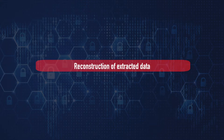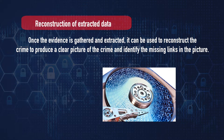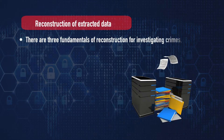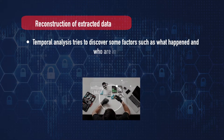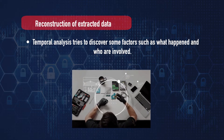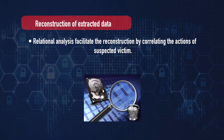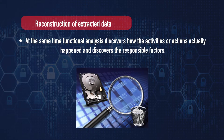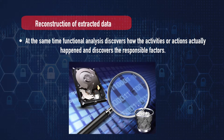Next is reconstruction of the extracted data. Once evidence is gathered and extracted, it can be used to reconstruct the crime to produce a clear picture, identify the victim, and identify missing links. There are three fundamentals used for reconstruction: temporal analysis, relational analysis, and functional analysis. Temporal analysis tries to discover what happened and who was involved; relational analysis facilitates reconstruction by correlating the actions of the suspect and victim; and functional analysis discovers how the activities actually happened and tries to identify the responsible factors.